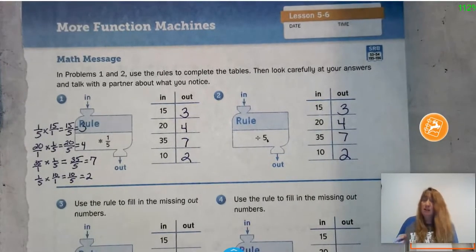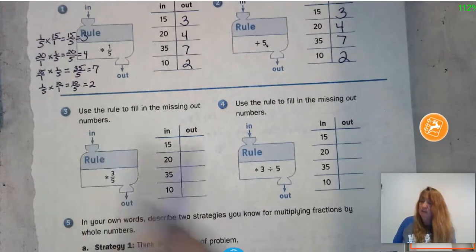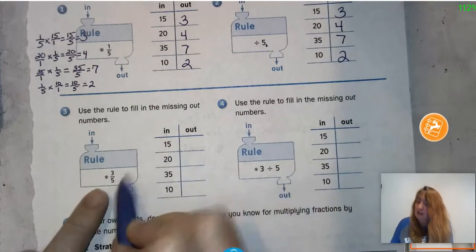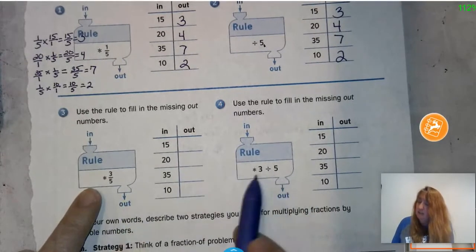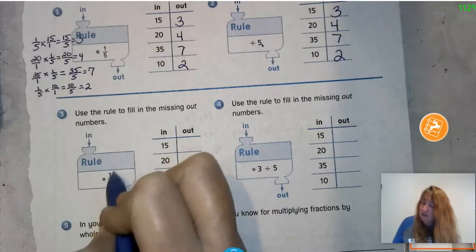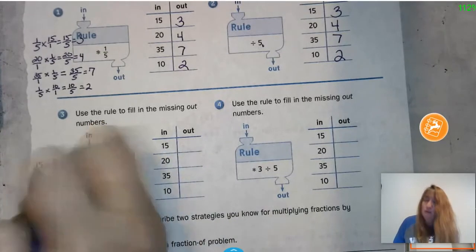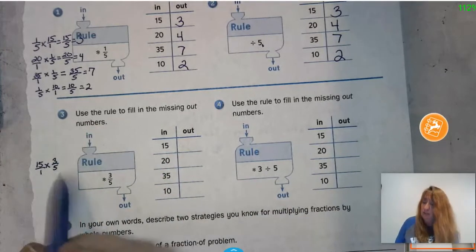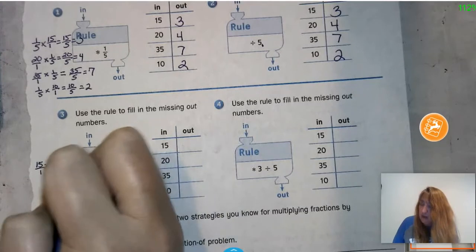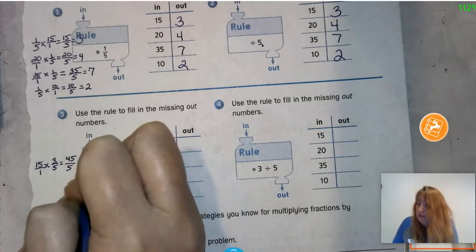Let's look at the bottom of the page and see if this works all the time. Now we have to multiply by 3/5. Let's try: 15 times 3/5 — I put 15 over 1 and multiply across. 15 times 3 is 45, and 1 times 5 is 5, so 45 divided by 5 is 9. Our answer is 9.